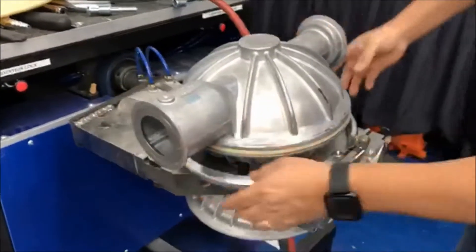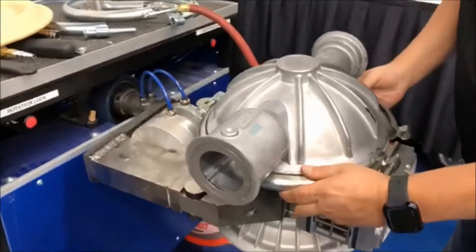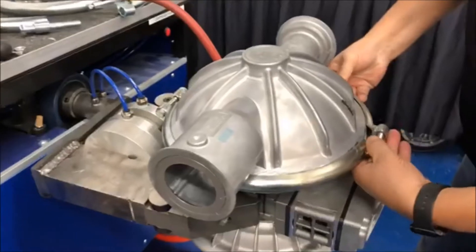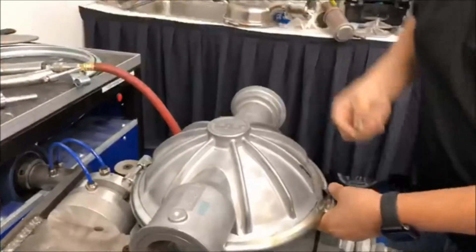All right, so we got the liquid chamber on. Get our clamp bags, drop it on there because we want to get these nice and tight so that we can tighten up the other side good.